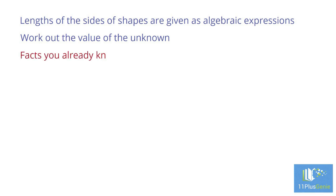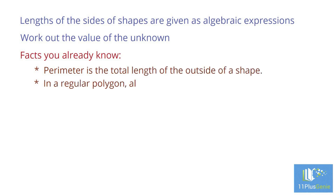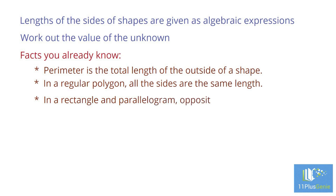Facts you already know. Perimeter is the total length of the outside of a shape. In a regular polygon, all the sides are the same length. In a rectangle and parallelogram, opposite sides are equal.